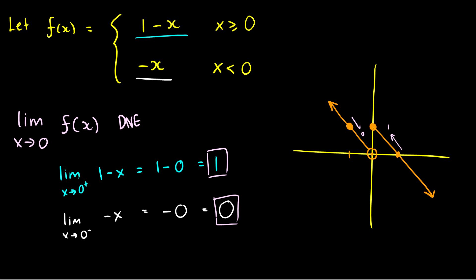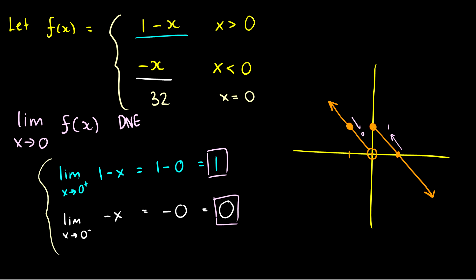With piecewise functions, if a specific value like x = 0 were given separately (for example, f(0) = 32), the limits wouldn't change at all, since approaching from the right uses 1 minus x and approaching from the left uses negative x. That x = 0 value only matters for plotting a point or checking continuity — it doesn't affect the limits, since we're interested in how x approaches 0 from either side. That's a graphical look at limits; leave any questions in the comments below.